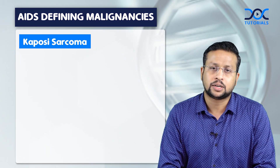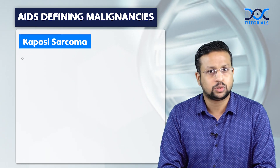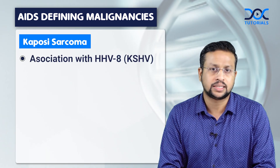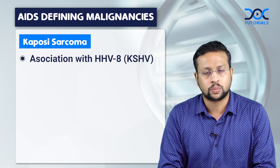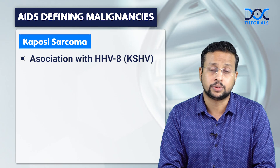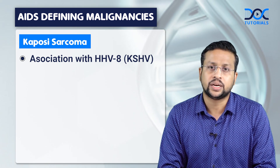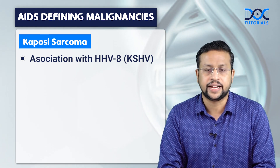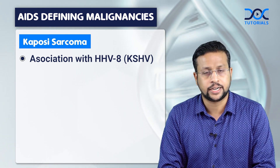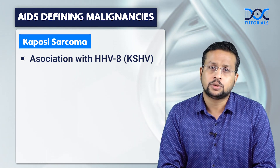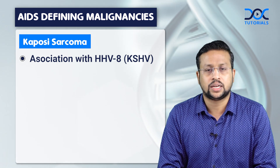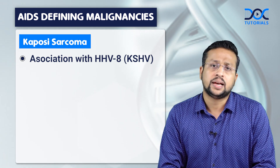Kaposi's sarcoma is associated with herpesvirus, also called human herpesvirus 8, HHV-8. Kaposi's sarcoma is a vascular tumor.